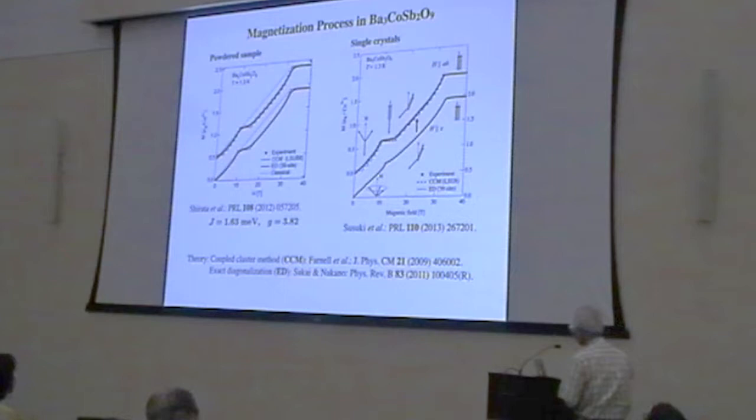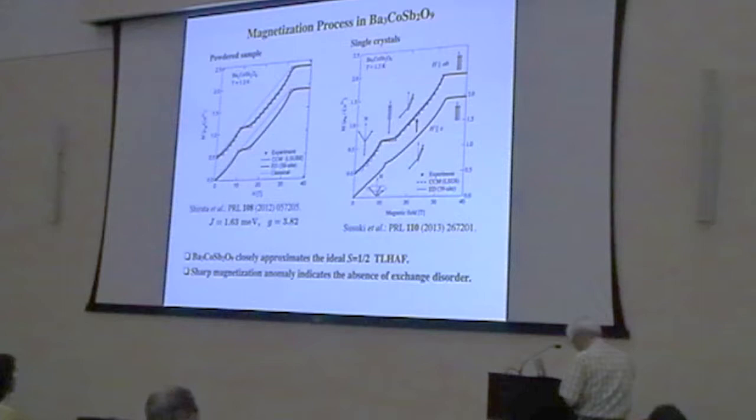However, for single crystals, we observed anisotropic magnetization. For the field parallel to the c-axis, we can observe the magnetization plateau. However, for the perpendicular direction we observe a kink instead of a plateau. This anisotropy is weak, easily explained by weak single-ion anisotropy and weak antiferromagnetic interlayer interaction. However, the anisotropic magnetization process is successfully described by theory.